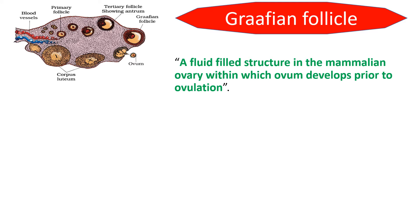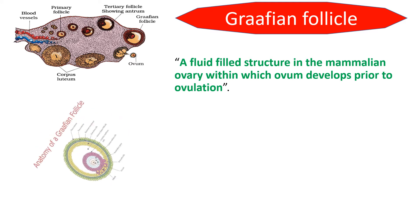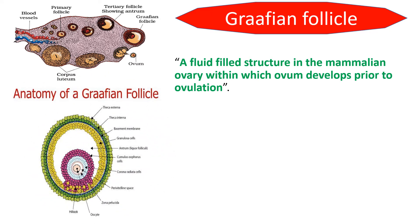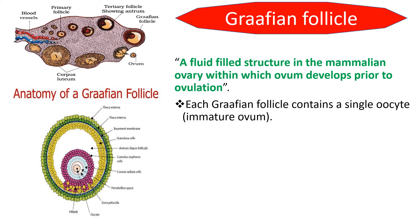This is the Graafian follicle — a structure with a cavity filled with fluid within which the egg develops. Here, a detailed, clear-cut diagrammatic representation of the Graafian follicle is presented. By understanding the labeling of this structure, we will be able to explain the structure of the Graafian follicle in an easy way. Let us first understand the labeled parts.